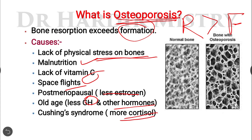These are the causes behind the development of Osteoporosis. Here you are seeing two photographs — one is the normal bone and the second is the bone with Osteoporosis. The normal bone has higher strength, while the osteoporotic bone has lower strength, making the bone weak.